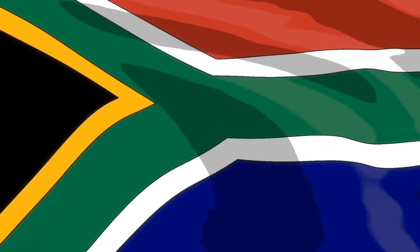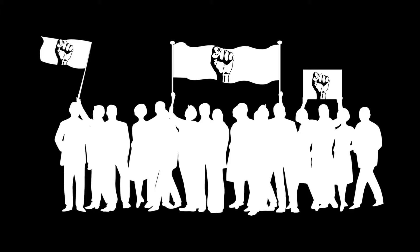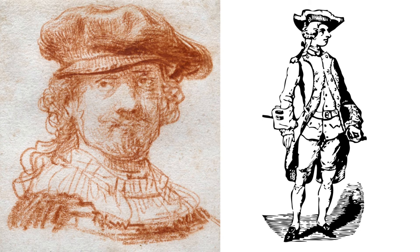On June 16, 1976, the youth stood up against apartheid and changed the political history of South Africa forever. The event became known as the Soweto Uprising and it undoubtedly accelerated the country's progress towards an equal and democratic society. But in order to understand the uprising and its place in South Africa's fight for freedom, we have to first take a deep dive into the history of the country to the very start of colonialism.